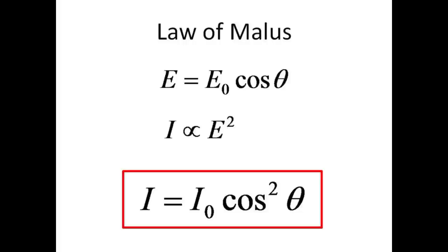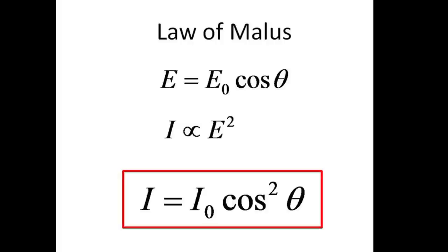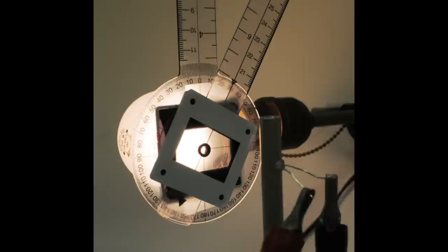Note that when the two polaroids are aligned parallel such that the angle theta is zero, the cosine of the angle is one, and the intensity is unchanged by the second polaroid. If, on the other hand, the two polaroids are cross-polarized, with theta being 90 degrees, the intensity drops to zero and no light is transmitted.